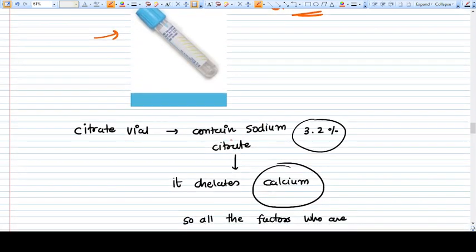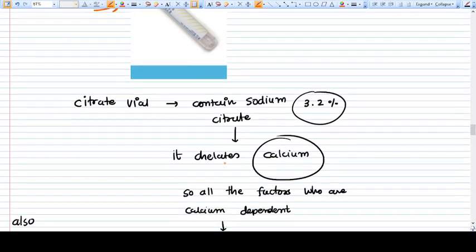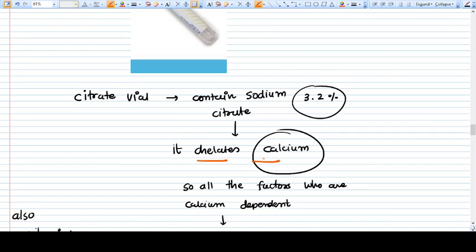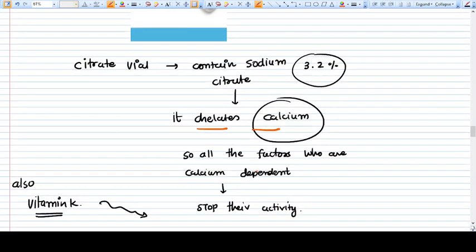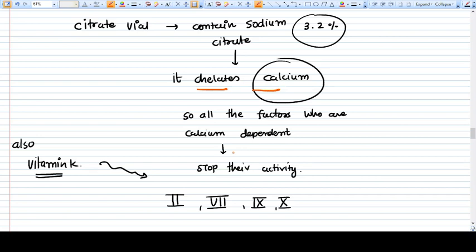This citrate vial contains sodium citrate 3.2%, which chelates the calcium. Calcium is very important for all the factors of coagulation. Once the citrate is added into the blood, the calcium is chelated, then coagulation will not happen. All the factors will stay as they are, not activated.